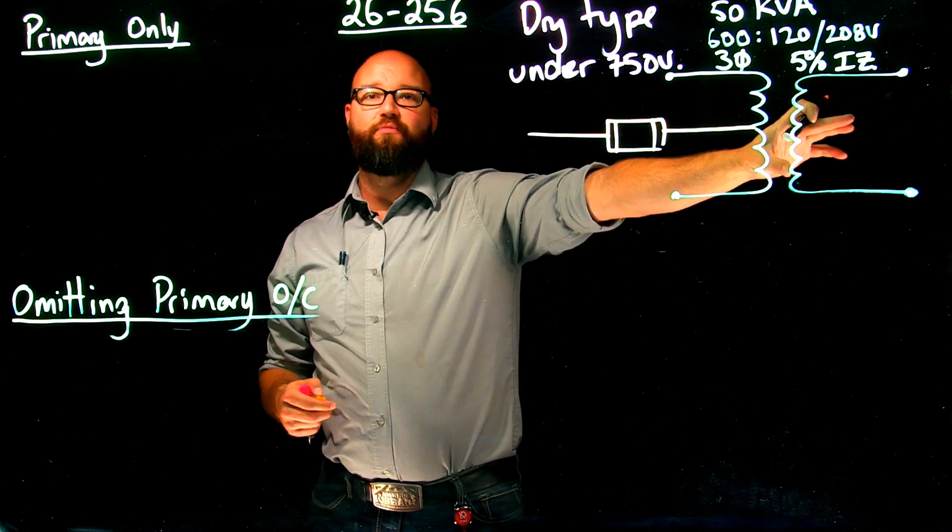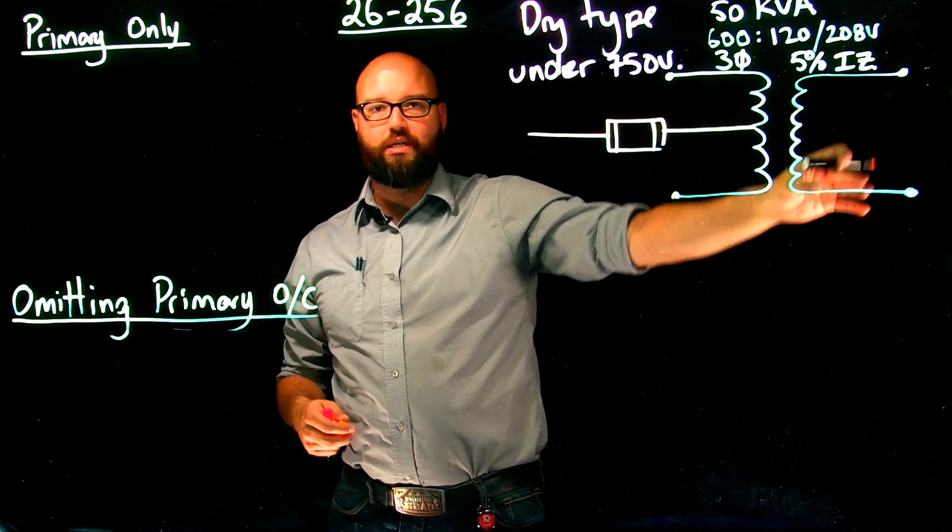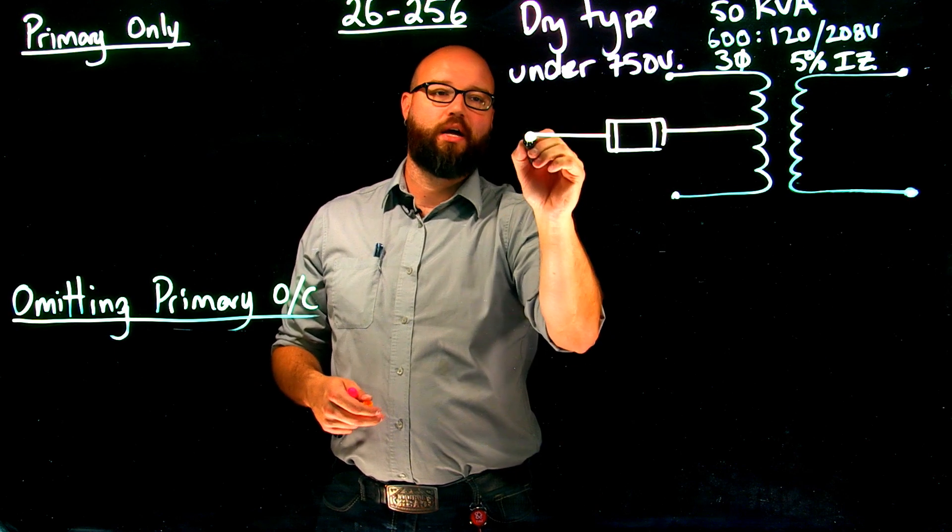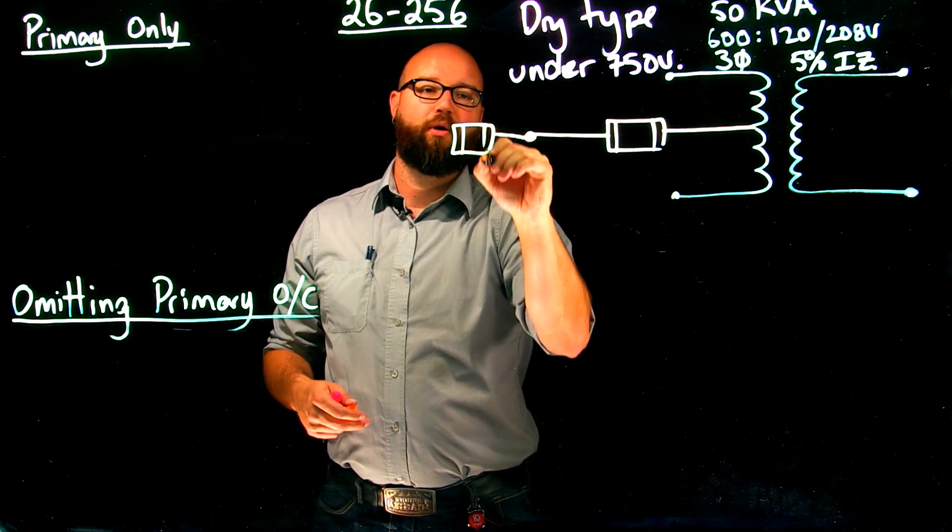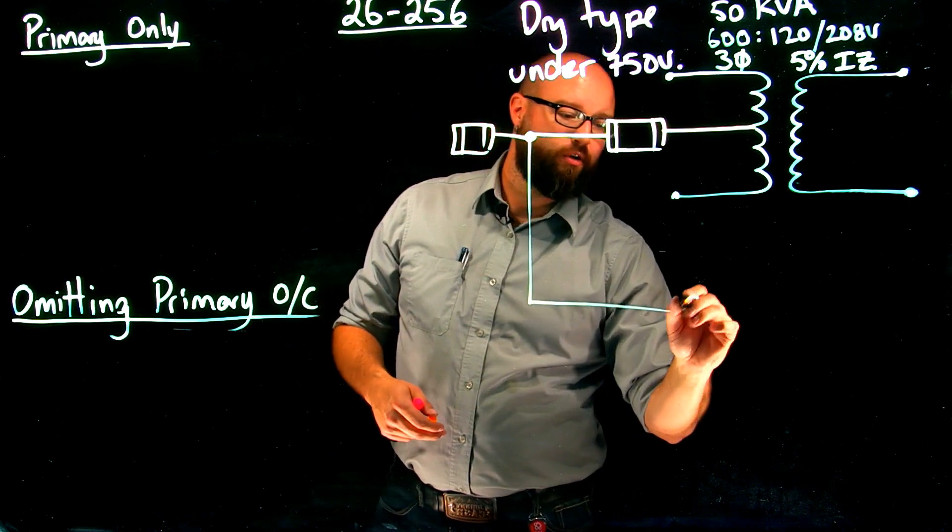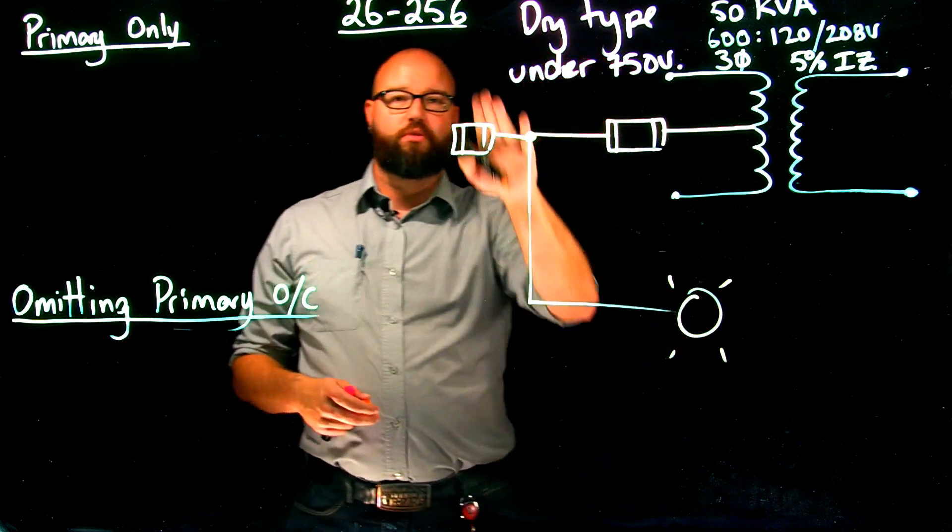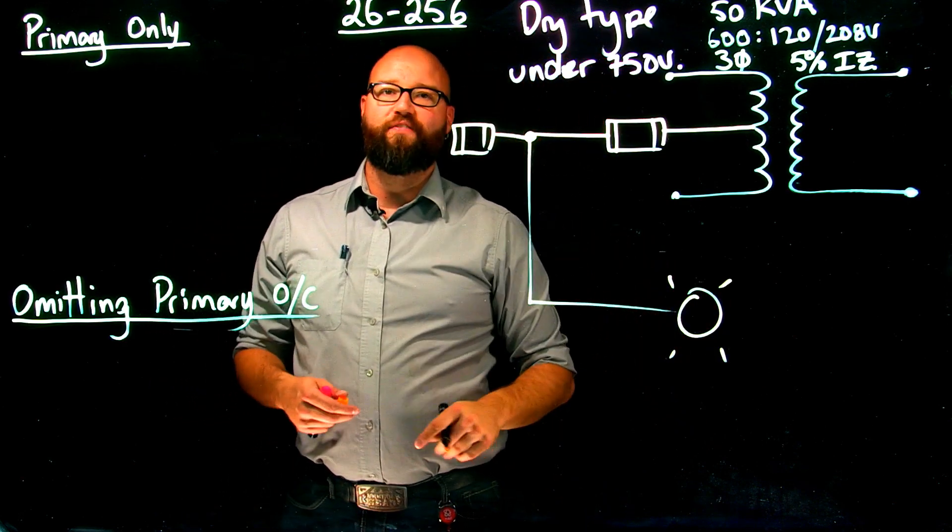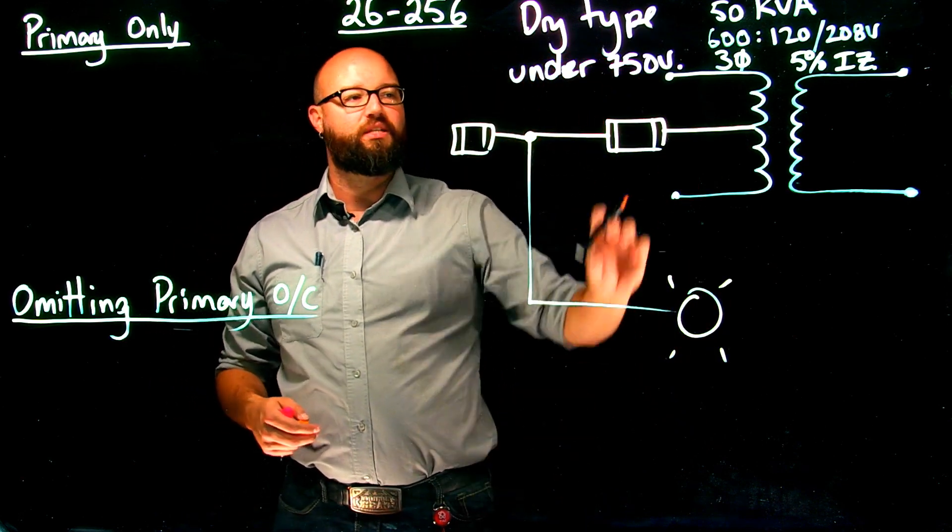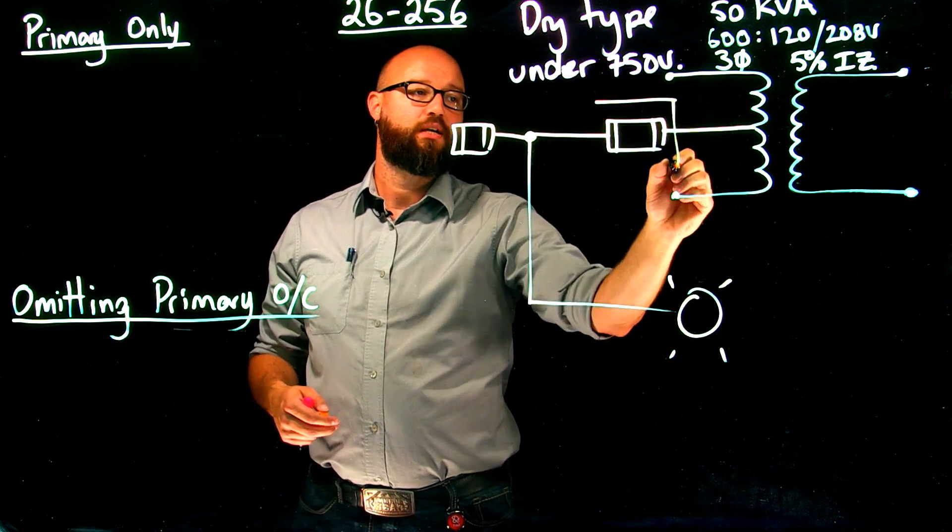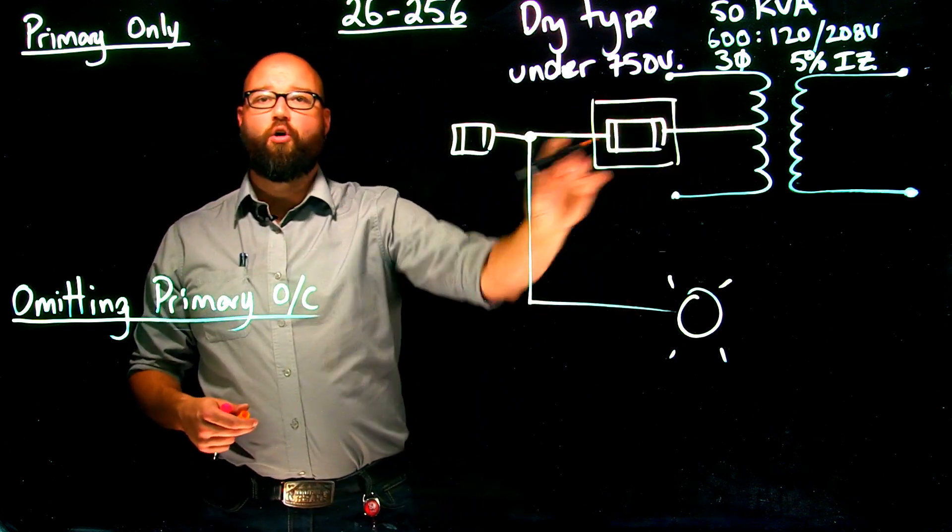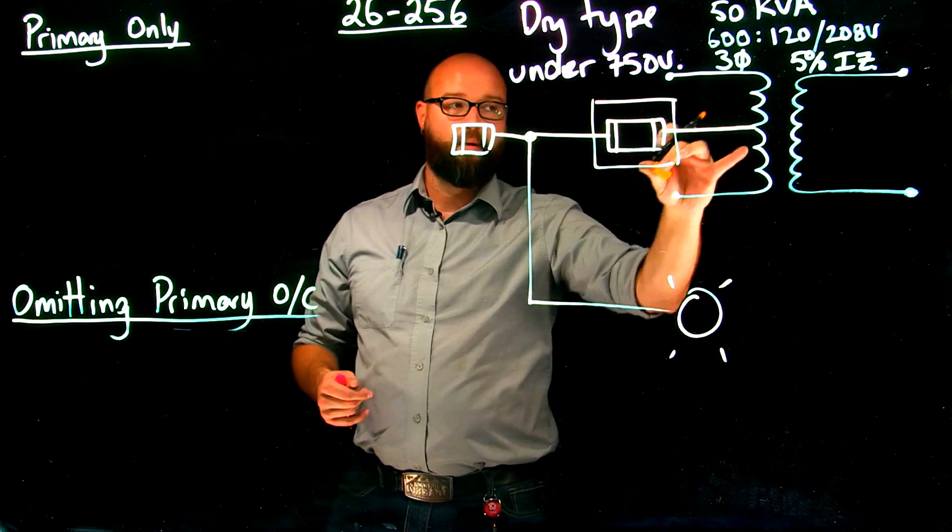versus our primary feeder, which we'll deal with when we decide to omit that primary overcurrent. So in this scenario, we have primary protection only, which adequately protects the secondary of my transformer, meaning I do not need a secondary protection in there. This could be going out to our primary feeder. We don't care right now about sizing our primary feeder; that would be done separately from this.